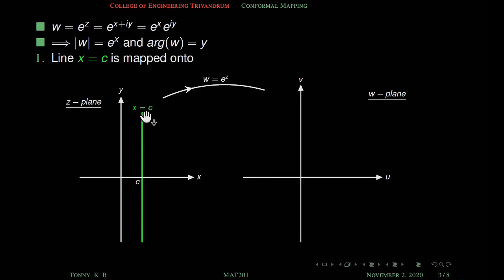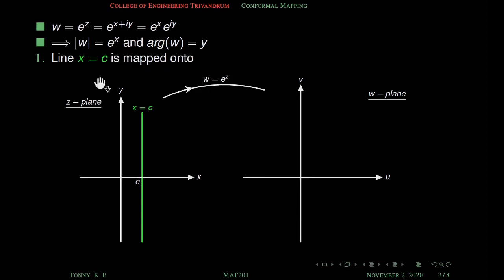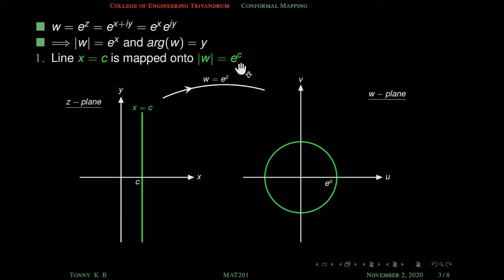x equal to c is a straight line parallel to the y-axis and passing through c. The image of x equal to c under this transformation: when x equal to c, modulus of w becomes e raised to c, and y has no restriction, meaning argument of w has no restriction. So x equal to c is mapped onto modulus w equal to e raised to c, which is a circle with center at the origin and radius e raised to c.